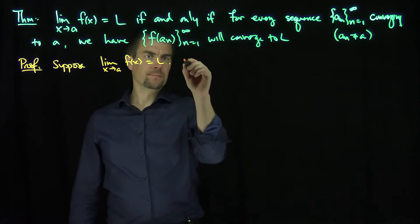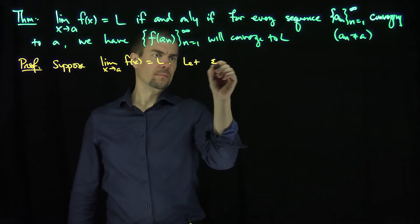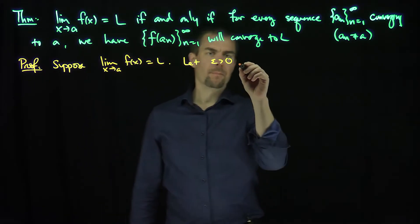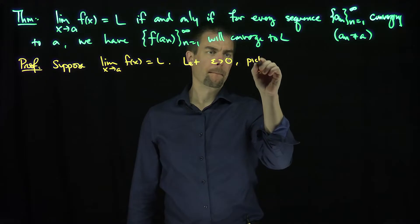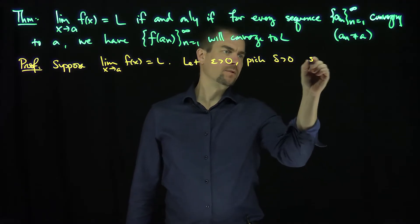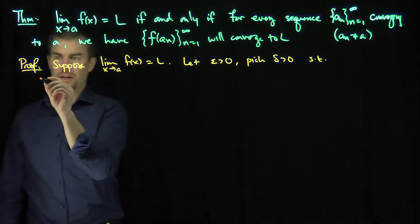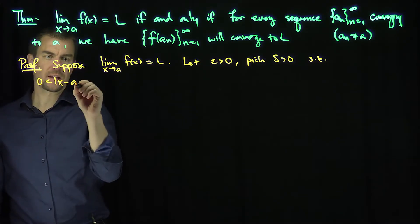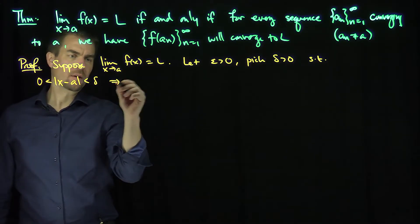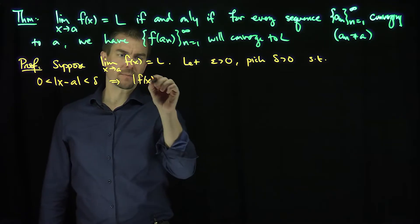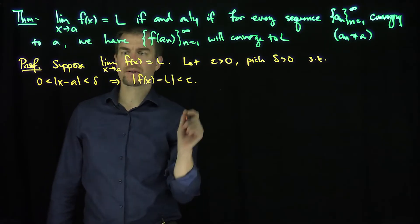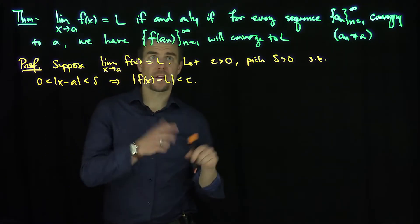Let epsilon be greater than zero, and pick delta such that, by definition, zero less than |x - a| less than delta implies that |f(x) - L| is less than epsilon. Here I'm using exactly the definition that that converges.